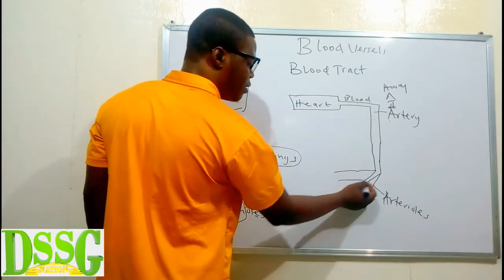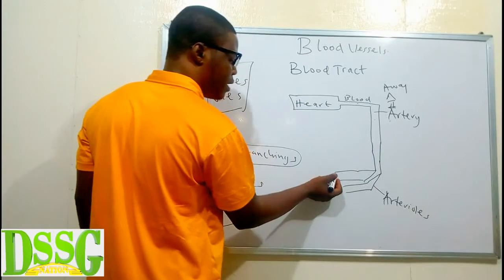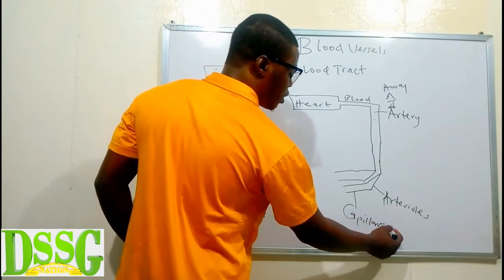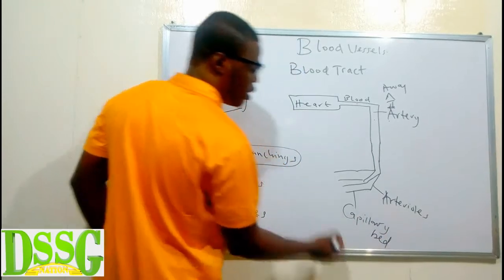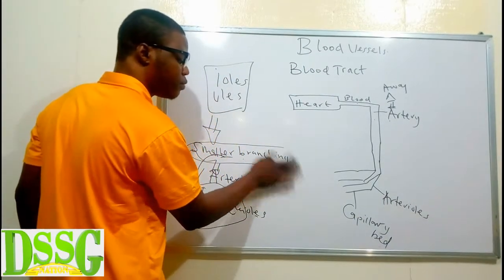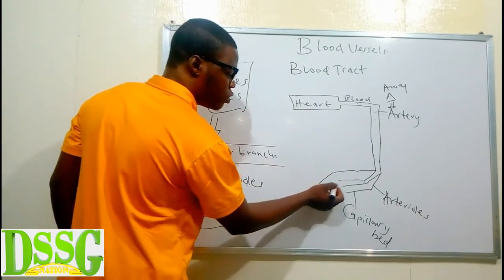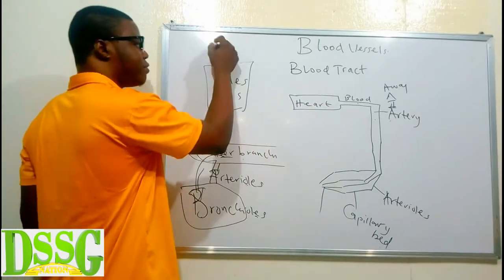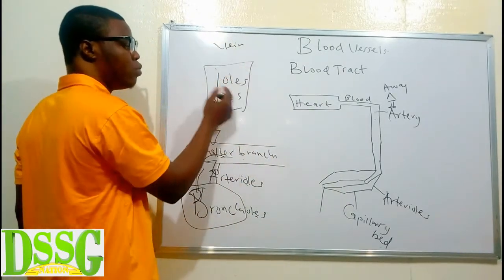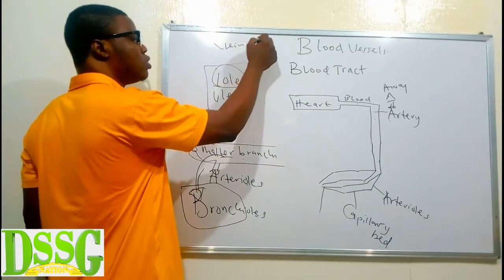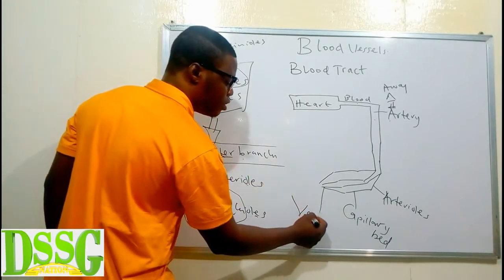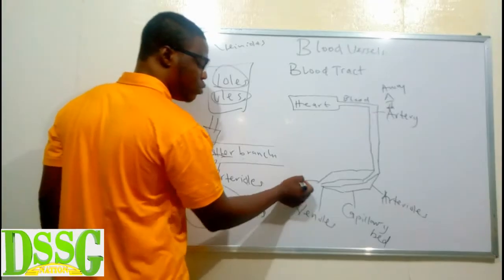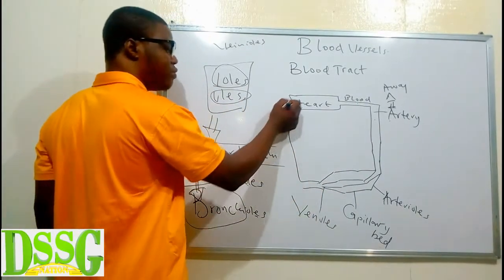The arterioles are going to form the capillary bed. Then the capillary bed is going to give rise to smaller branches of vein. We won't call them veins at this point — we are going to call them venules, adding the '-ules' suffix. Then the venules will give rise to veins.